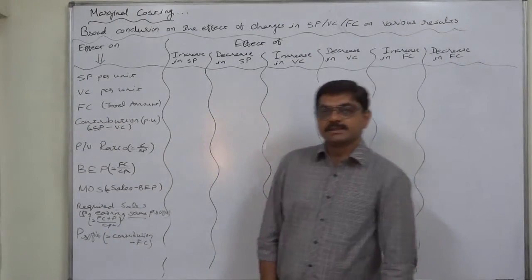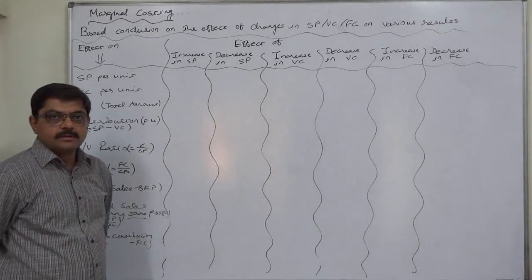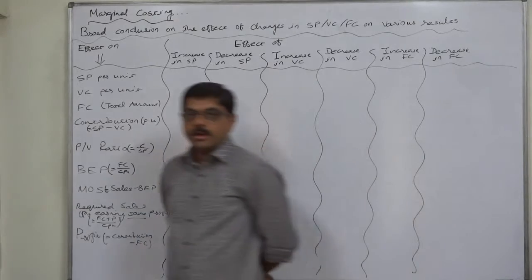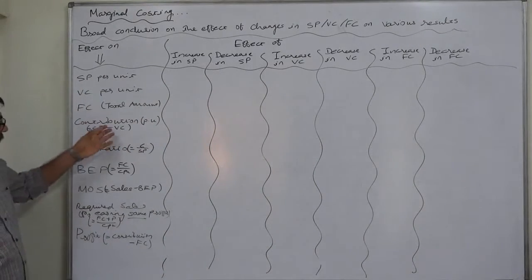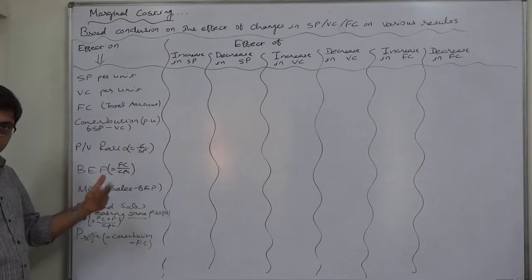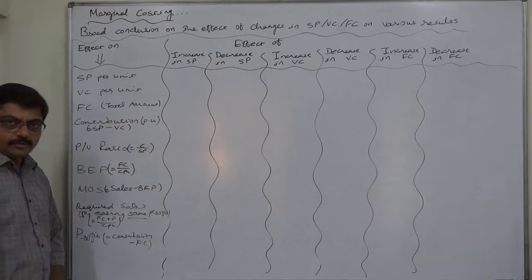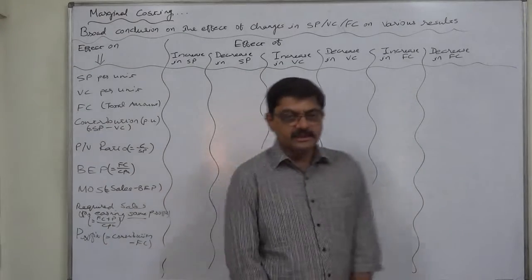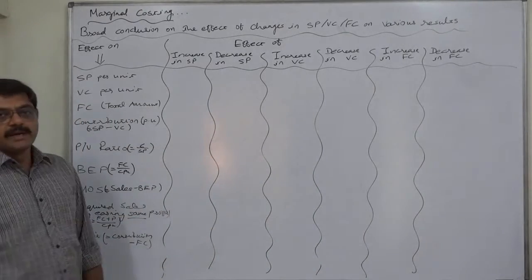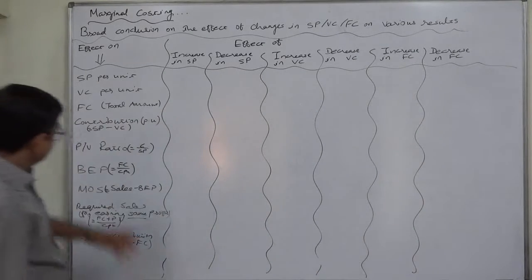Hello friends. Since the last seven lectures, we have been studying the effects of increase or decrease in selling price, variable cost, and fixed cost on various parameters like contribution per unit, PV ratio, BEP, margin of safety, required sales to earn a specific amount of profit, and ultimately the profit on sales under the existing quantity. Now let us try to make some broad conclusions or prepare a summary of all these effects on these important measures.